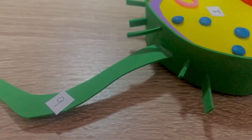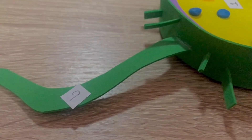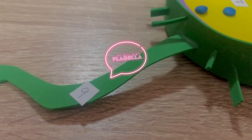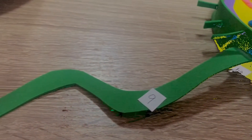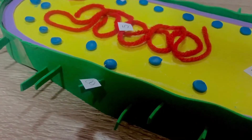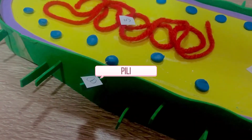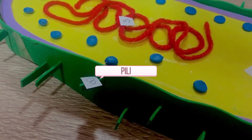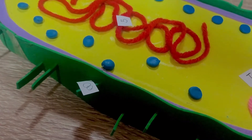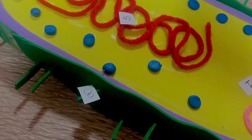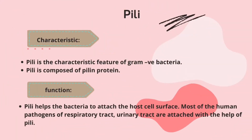This is flagella. It helps motility of the bacteria. Pili are hollow, filamentous, and non-helical structures. They are numerous and shorter than flagella. Pili is the characteristic feature of Gram-negative bacteria. It is also composed of pili protein.